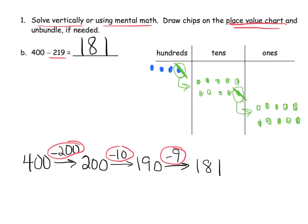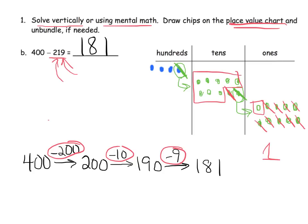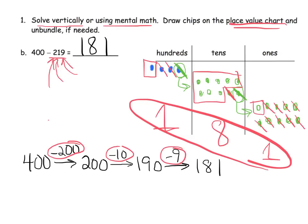The unbundled disks are gone now, and we're ready to do our crossing off. Cross off nine ones — one, two, three, four, five, six, seven, eight, nine — leaving us with one one. Cross off one ten, leaving us with eight tens. Then cross off two hundreds, leaving us with one hundred. Our answer is 181.